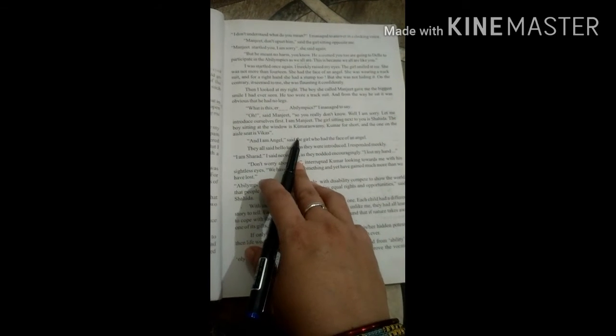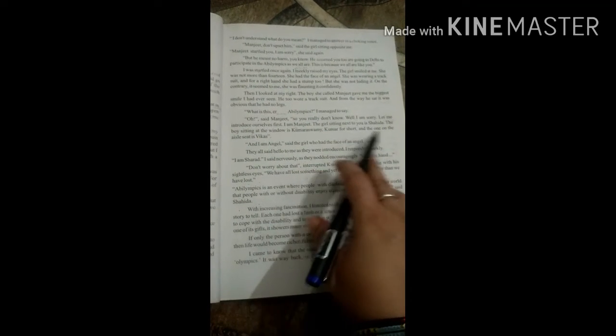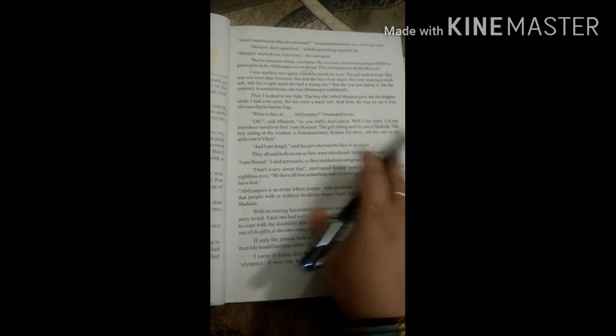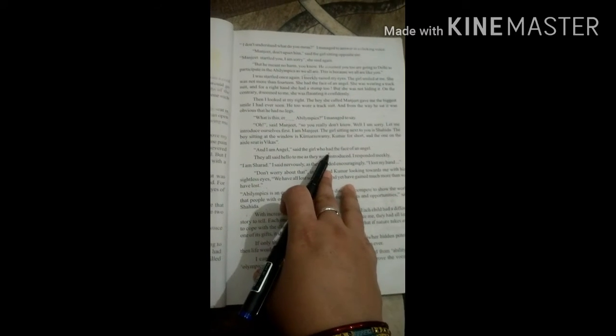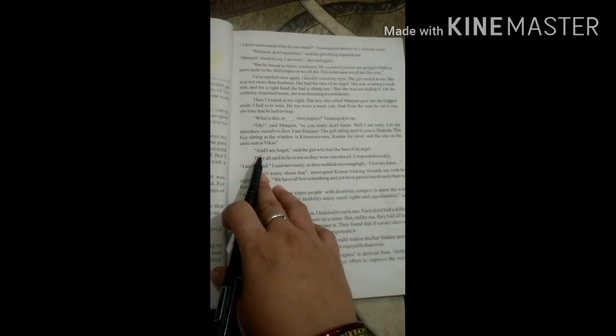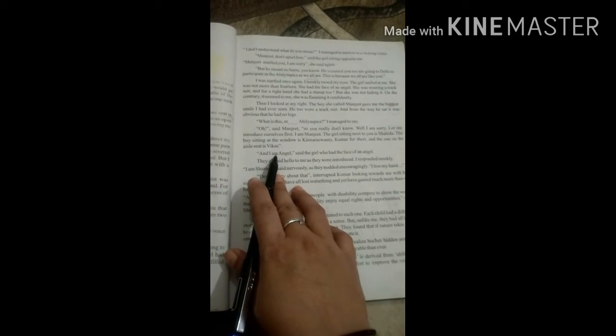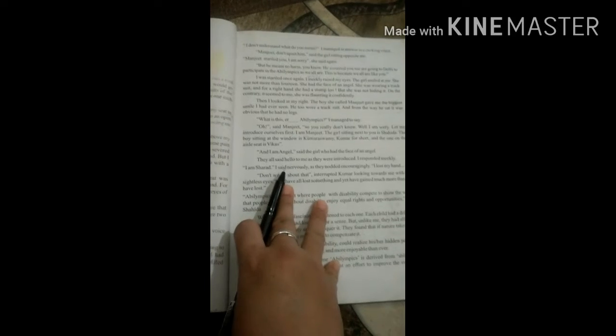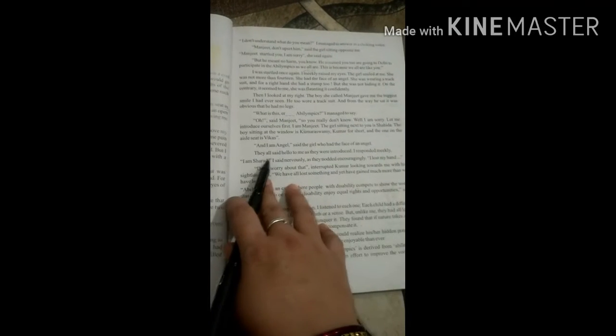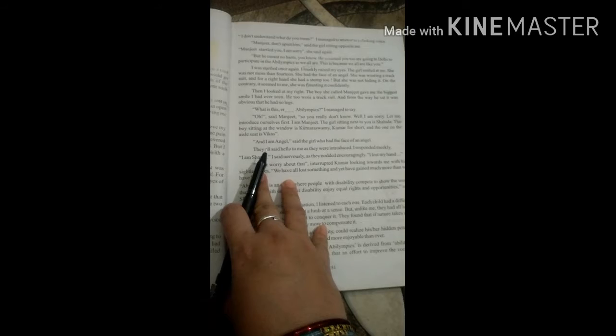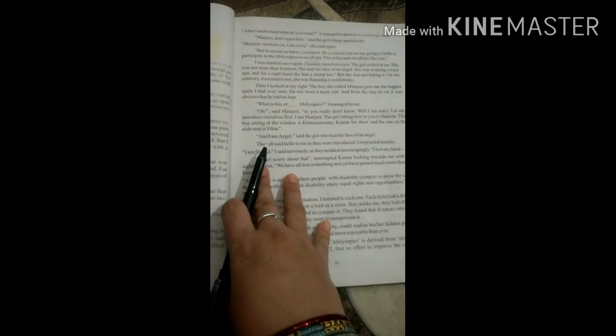He has told his name Manjeet. And there is a boy who is in the window seat, and one is in the aisle seat. That is Vikas. Aisle means the passage between the rows of seats. And I am Angel, said the girl who had the face of an angel. His name is Angel.